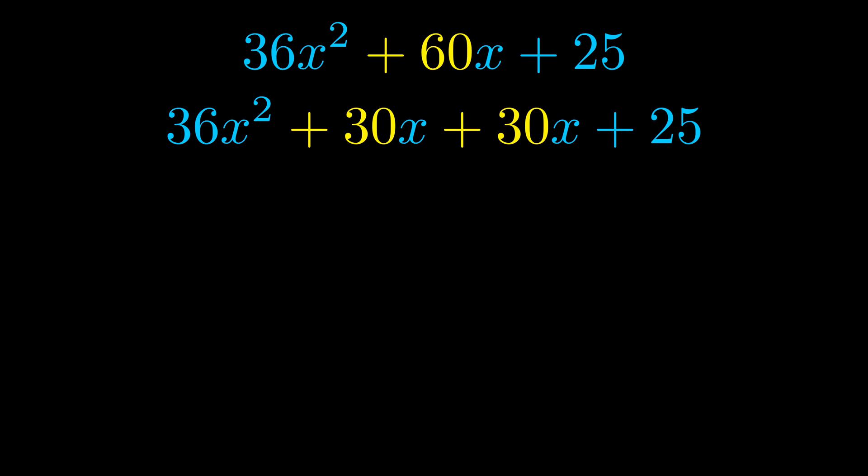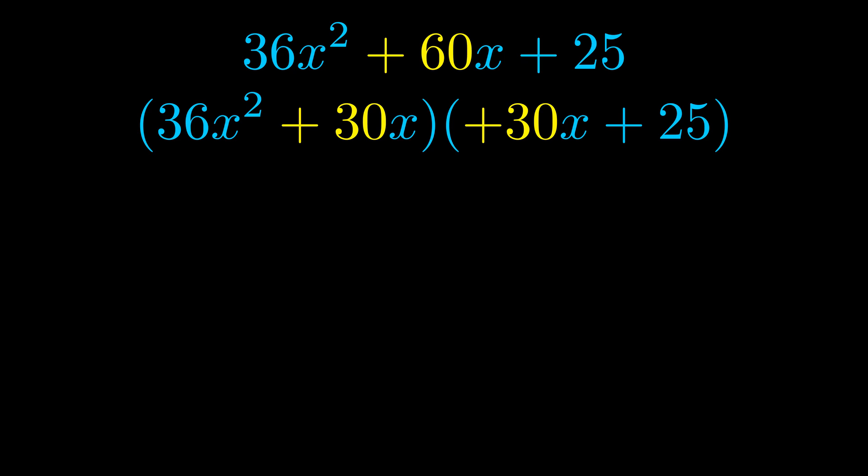Once we've done this, we go ahead and put parentheses around the first term and the last term. And we do that so that we can take the greatest common factor out of both terms. We can see the greatest common factor is now outside in green.